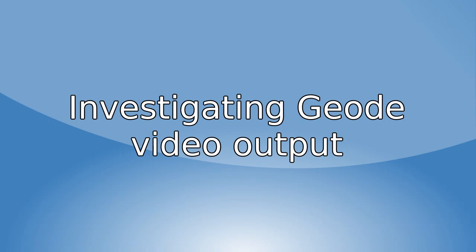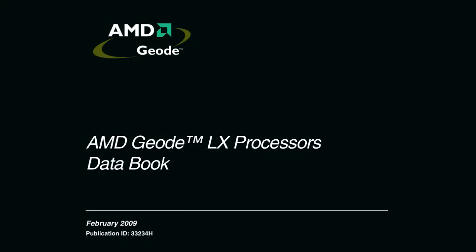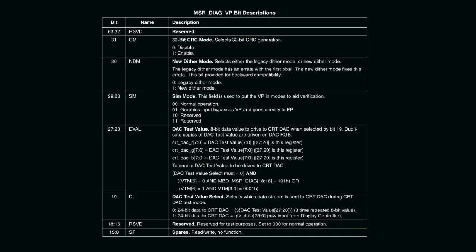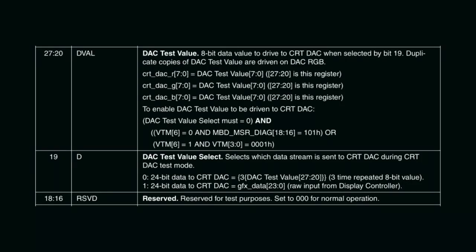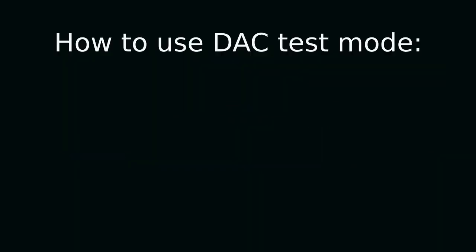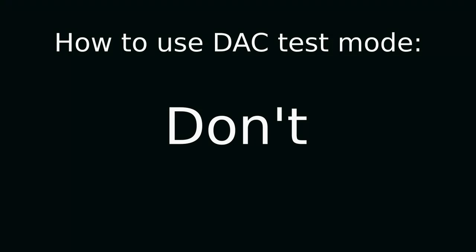Without an obvious board issue, I decided to research how the chip outputs video. I opened the datasheet and started looking for anything useful. I first looked at the video processor diagnostic register and found some interesting fields that can be used to test the video processor DAC. It looks complicated, but it's quite straightforward. Here's how to use it. Don't. Save yourself from this nightmare.